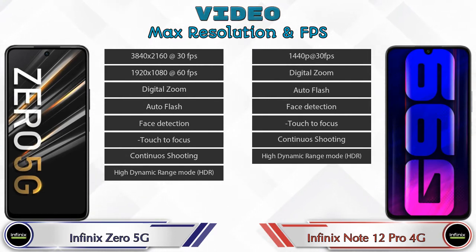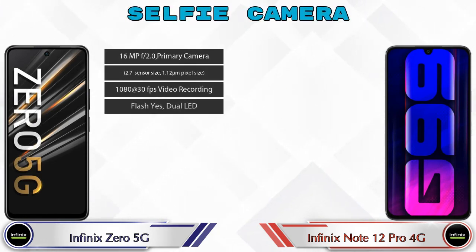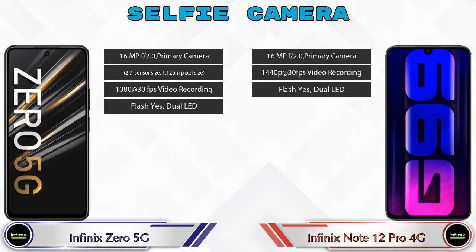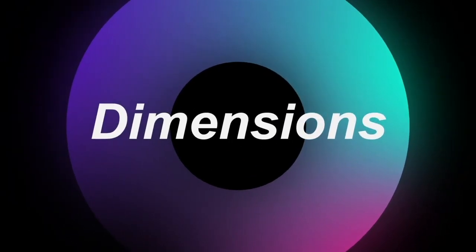Now let's talk about the front selfie camera. The Zero 5G has a single camera with four different features available, and the Note 12 Pro 4G also has a single camera with three features available. Now let's check the details about dimensions.